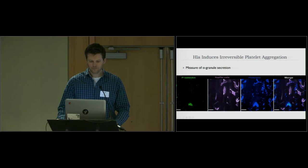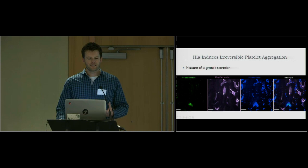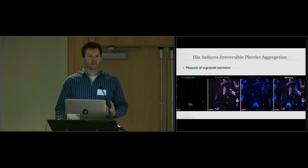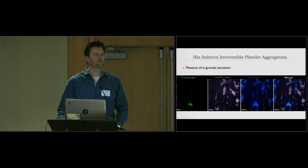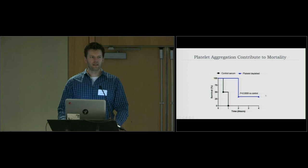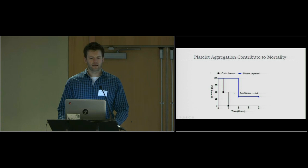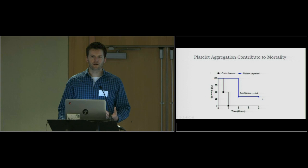Are these aggregates just loosely adherent or irreversibly aggregated? We co-injected at the same time as alpha toxin a fluorescent antibody against P-selectin. Once aggregates formed, they started expressing P-selectin — a measure of alpha granule secretion and irreversible platelet aggregation. So these platelets are stuck. At this concentration of alpha toxin, mice start to die rapidly, and this is partly contributed to by platelet aggregation, because depleting platelets extends survival somewhat. These mice ultimately die of lung edema, but the early stage is dependent on platelet aggregation.